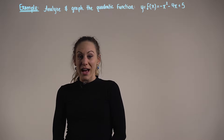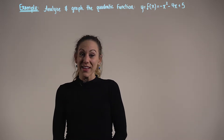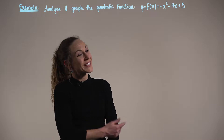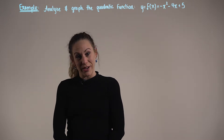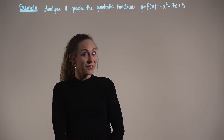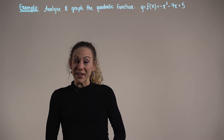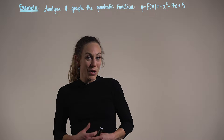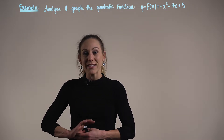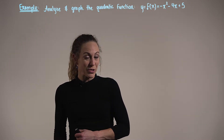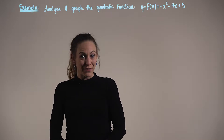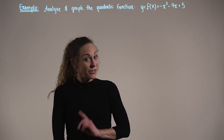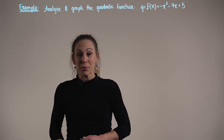In this example, we are being asked to analyze and graph the quadratic function defined by f(x) = -x² - 4x + 5. Even though we're given this quadratic function in its standard form, we're still going to use those same eight steps that we used when establishing the strategy for a quadratic function in vertex form. The first step is to determine how the parabola opens.